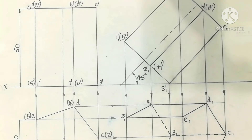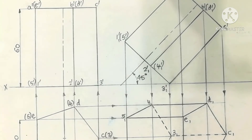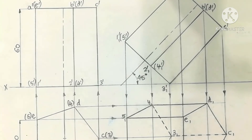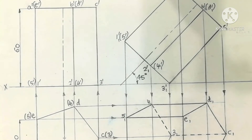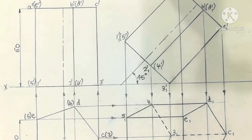Various grades of pencils are used: H pencil, HB pencil, and 2H pencil. The lines drawn with each pencil grade are clearly explained, using the solid object called a pentagonal prism.